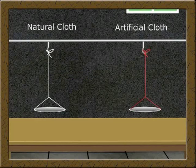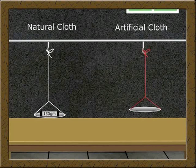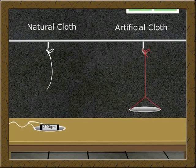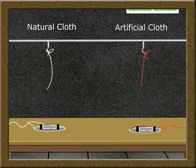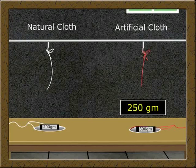Artificial clothes are stronger than natural clothes. To prove this, take a piece of cotton thread. Hang the thread by fixing one end to a hook and the other end to a plate. Add weights starting with 100 grams, then 150 grams, then 200 grams. It breaks at 200 grams, meaning the cotton thread can take up to 150 grams. Next, take a piece of polyester thread and hang it similarly. Add 100 grams, then 150, then 200, then 300 grams. It breaks at 300 grams, meaning the polyester thread can take 250 grams. This confirms that artificial cloth is stronger than natural cloth.